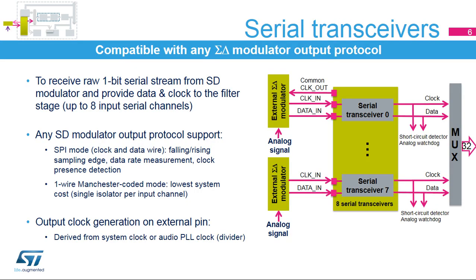Serial transceivers provide the connection to the external Sigma Delta modulator. SPI mode works up to 20 MHz, or the DF-SDM clock divided by 4, with configurable options including sampling edge detection, data rate measurement, and clock presence monitoring. One-wire Manchester-coded mode, where clock is recovered from the data, works up to 10 MHz, or DF-SDM clock divided by 6. A synchronization detection feature is also available in Manchester mode.